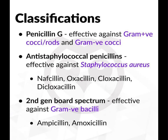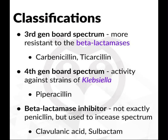Second-generation broad-spectrum penicillins are effective against gram-negative bacilli. Drugs include ampicillin and amoxicillin. Third-generation broad-spectrum penicillins have more resistance to the beta-lactamases. Drugs include carbenicillin and ticarcillin.